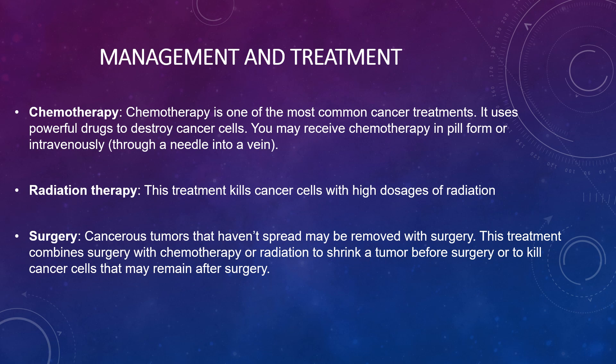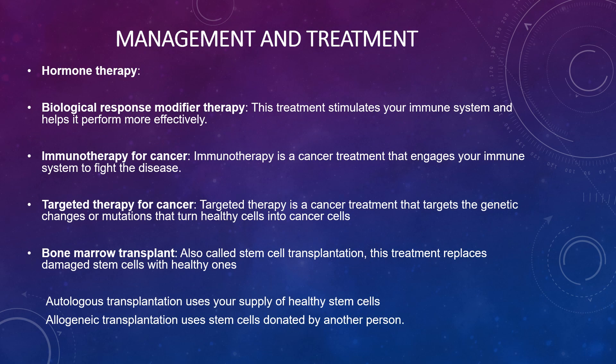Chemotherapy is the most common treatment, using powerful drugs to destroy cancer cells — received in pill form or intravenously through a needle into a vein. Radiation therapy kills cancer cells with high doses of radiation. Surgery can remove cancerous tumours that haven't spread, and can be combined with chemotherapy or radiation to shrink a tumour beforehand or kill remaining cancer cells after surgery. Other options include hormone therapy, biological response modifier therapy, immunotherapy, targeted therapy, and bone marrow transplant.